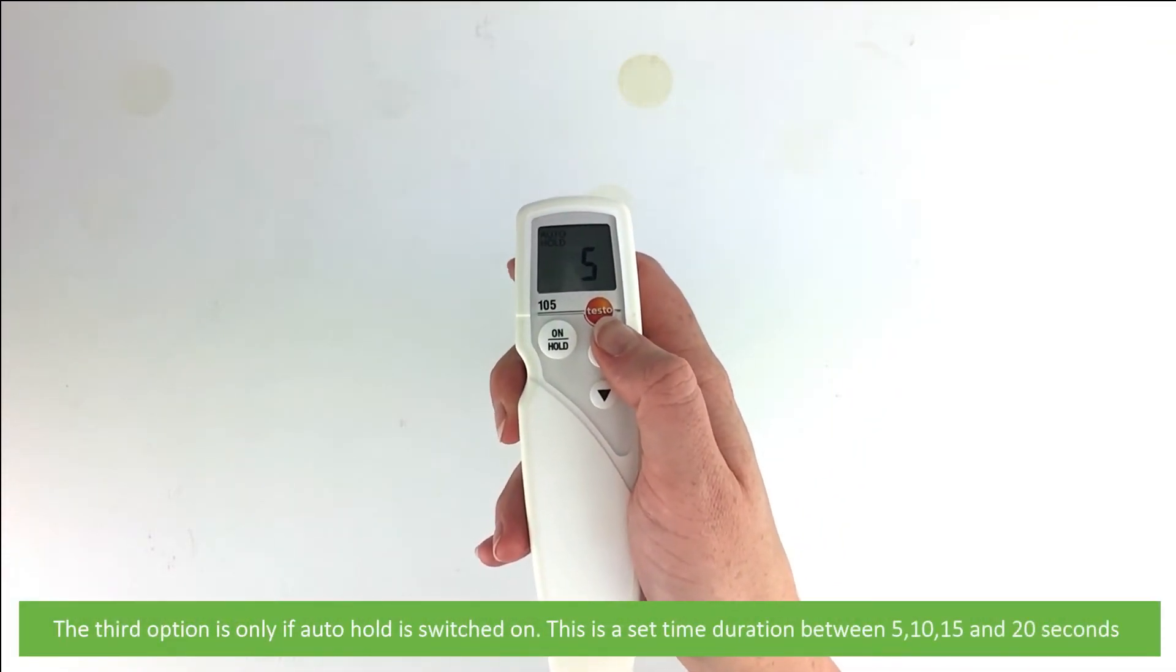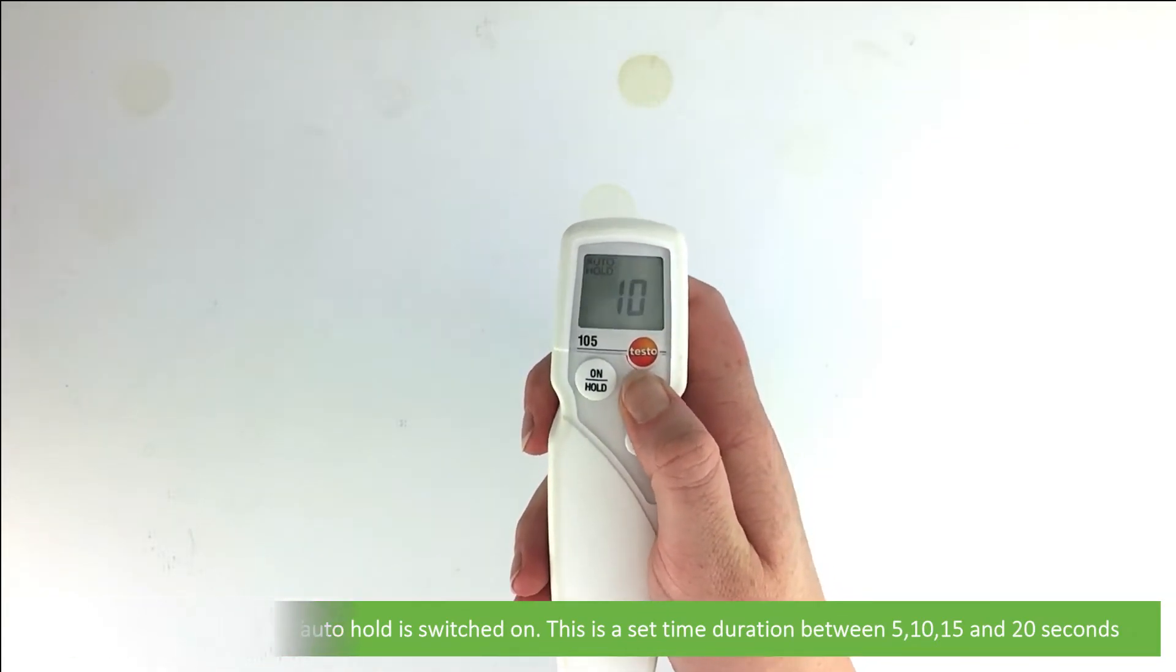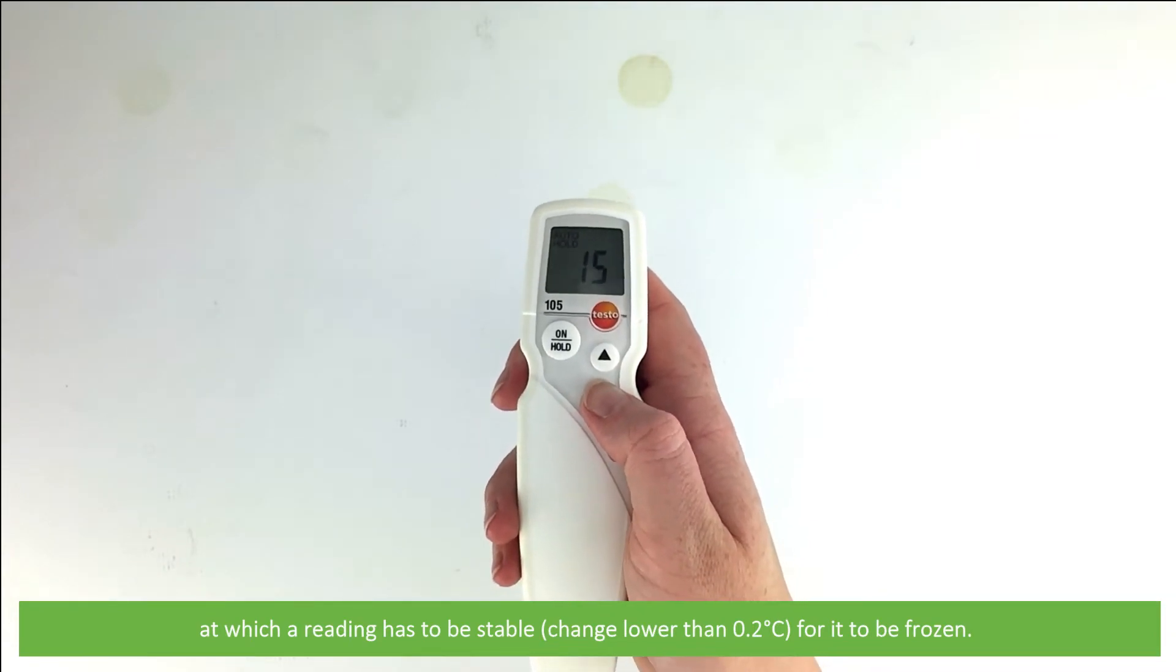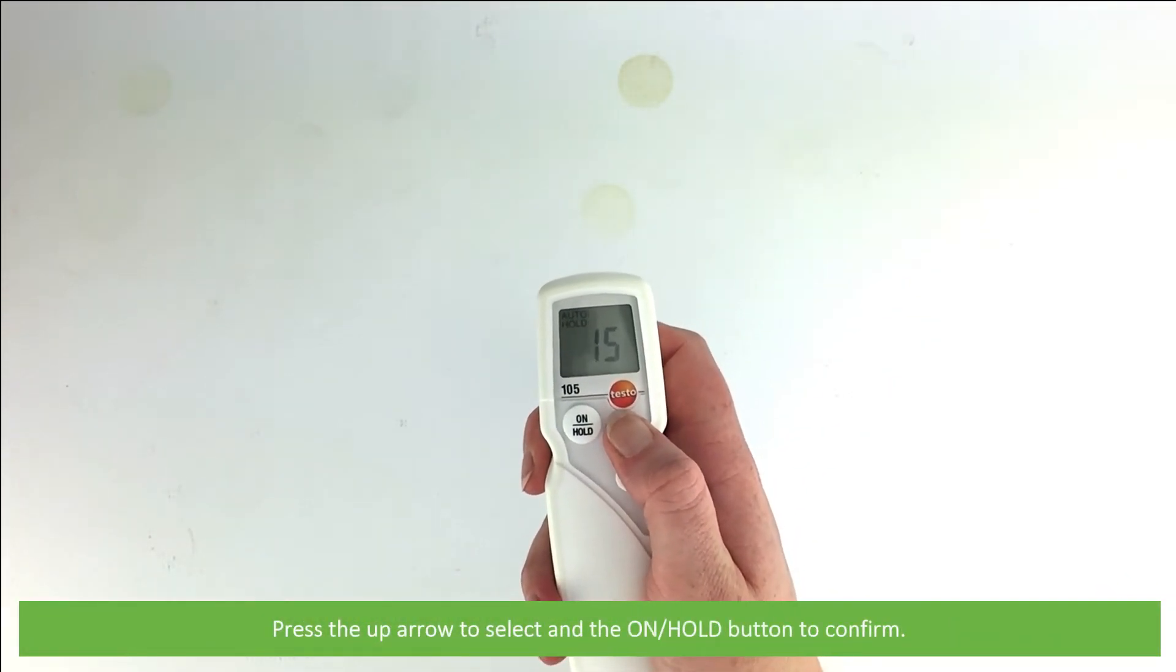The third option is only if auto hold is switched on. This is a set time duration between 5, 10, 15, and 20 seconds at which a reading has to be stable—that's a change lower than 0.2 degrees Celsius for it to be frozen. Press the up arrow to select and the on hold button to confirm.